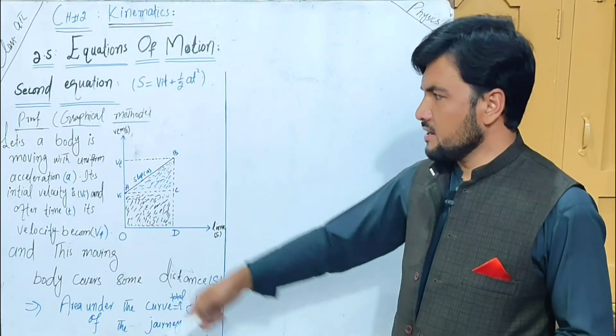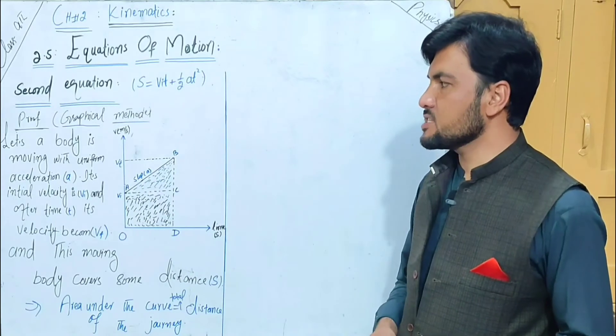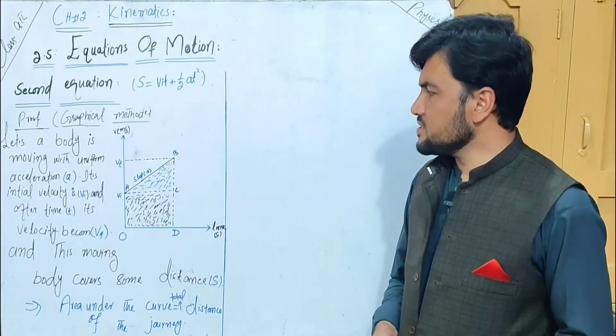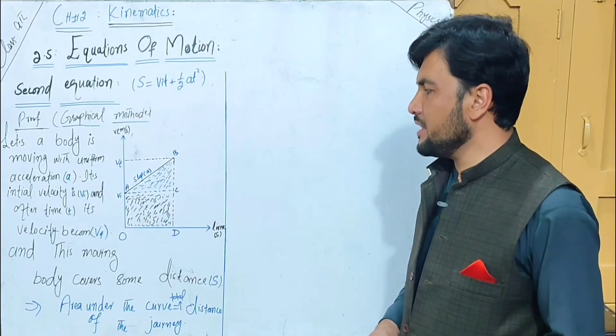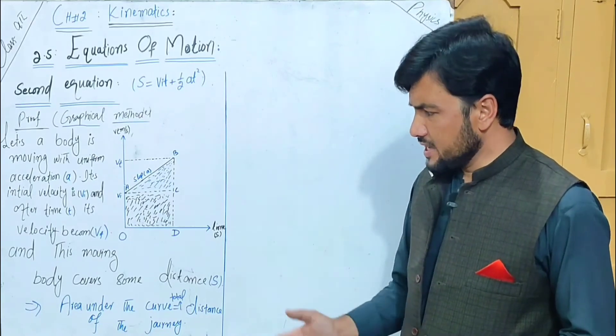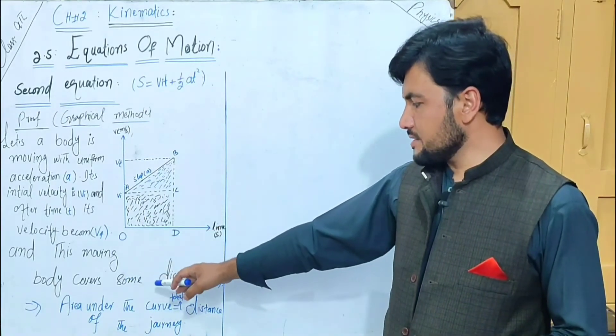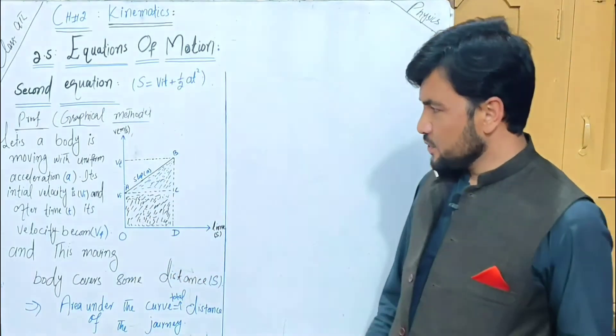Let's see the statement: a body is moving with uniform acceleration a, its initial velocity is v_i, and after some time t its velocity becomes v_f, and this moving body covers some distance s.